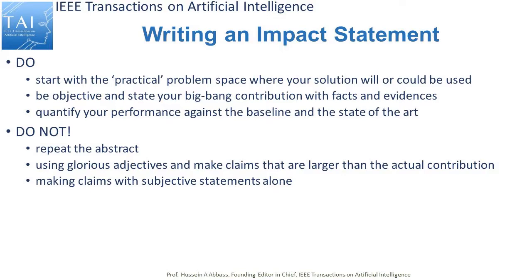For example, you could say something like: 'While our system still has a residual bias, we have reduced the probability for the system to generate a biased decision from 30% down to 1%.' Now, the don'ts. Do not repeat the abstract. There is no point in copying exactly the same statements from the abstract into the impact statement. The abstract is written for people in your field; the impact statement is written for the wider audience.